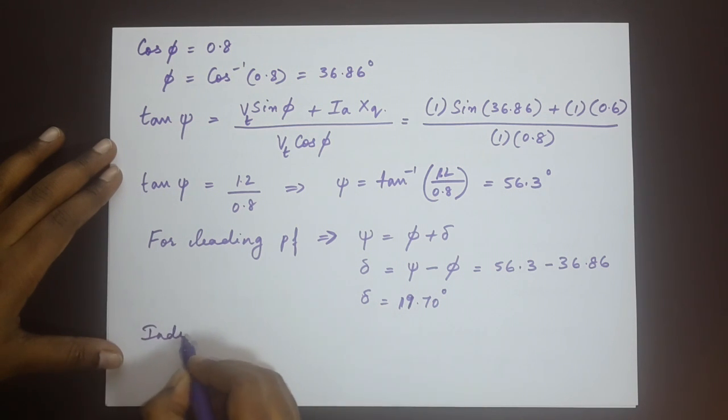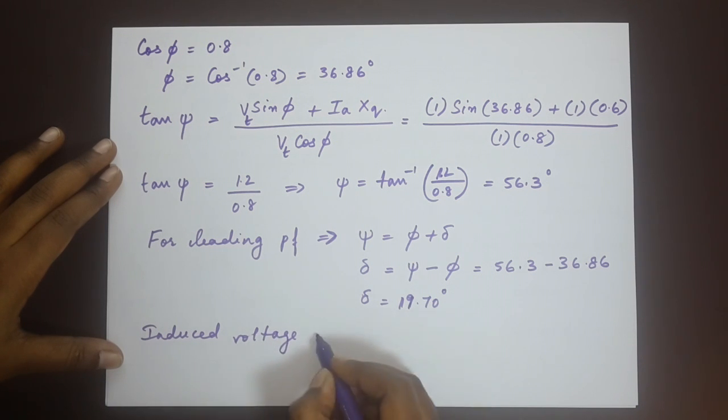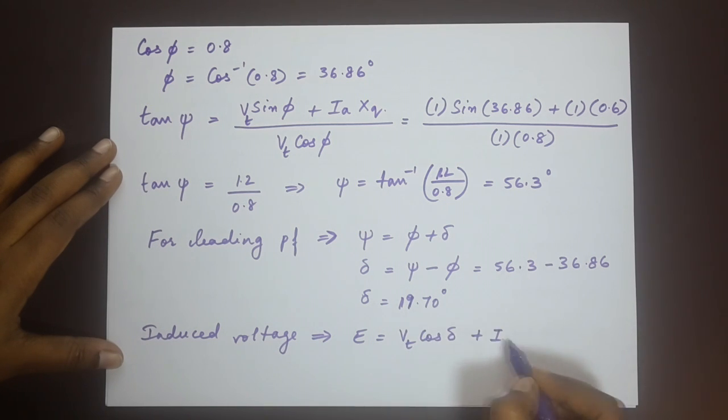The induced voltage equation E is equal to Vt cos delta plus id·Xd. So here we have one more unknown value, unknown term id. Now we do not know what id is.